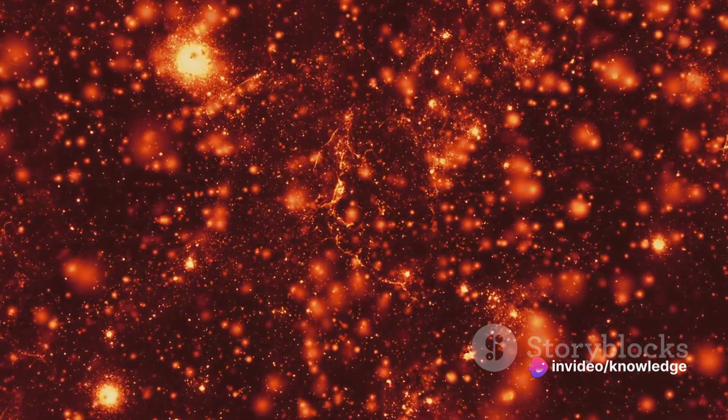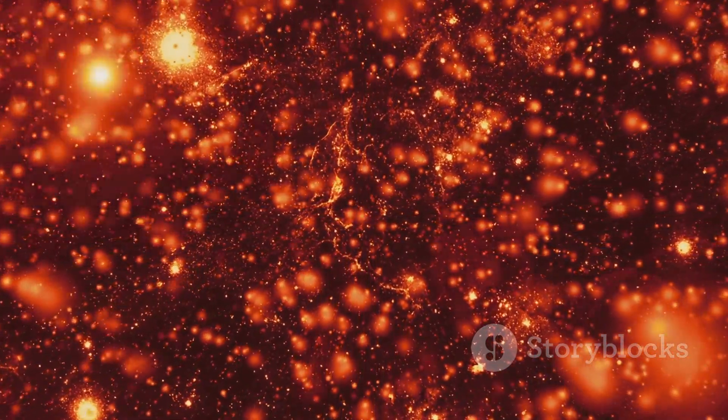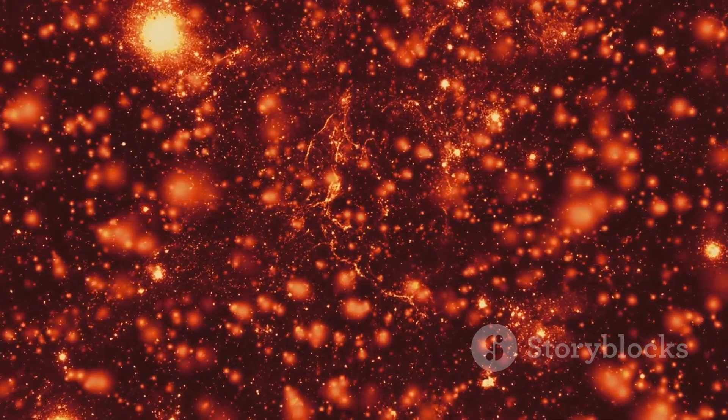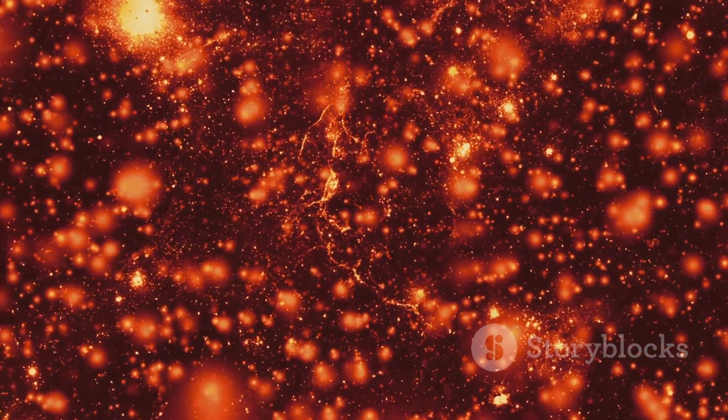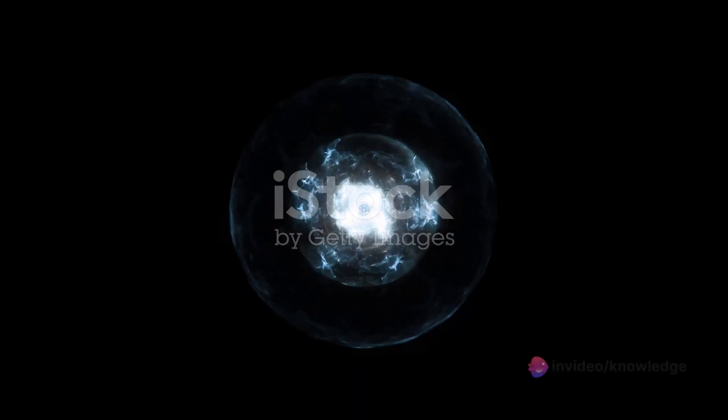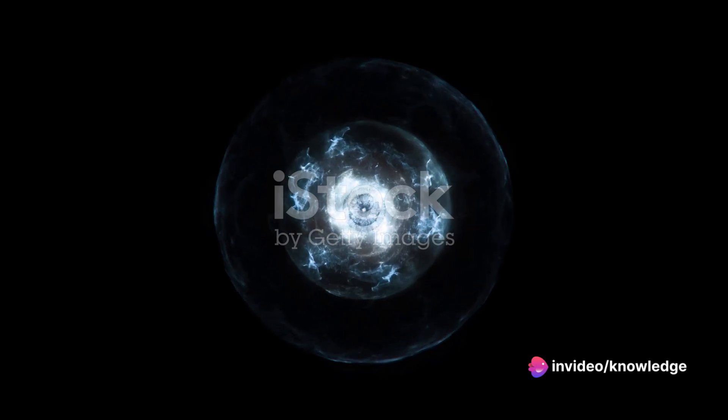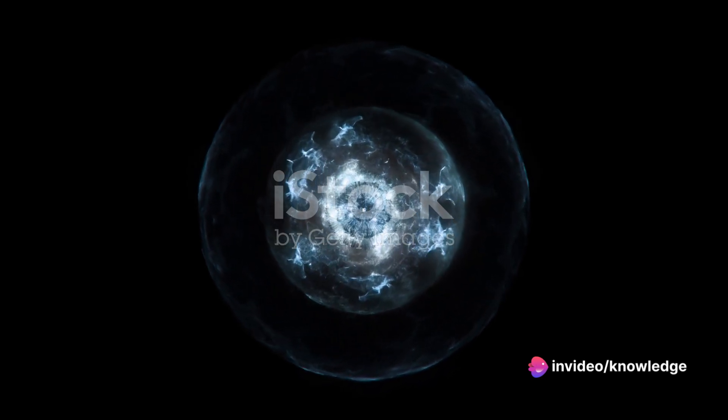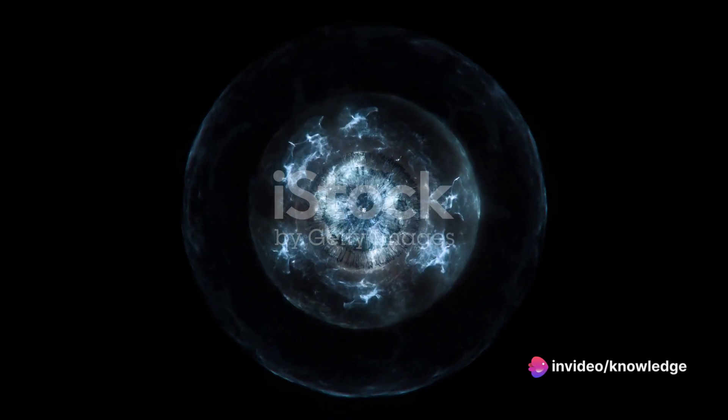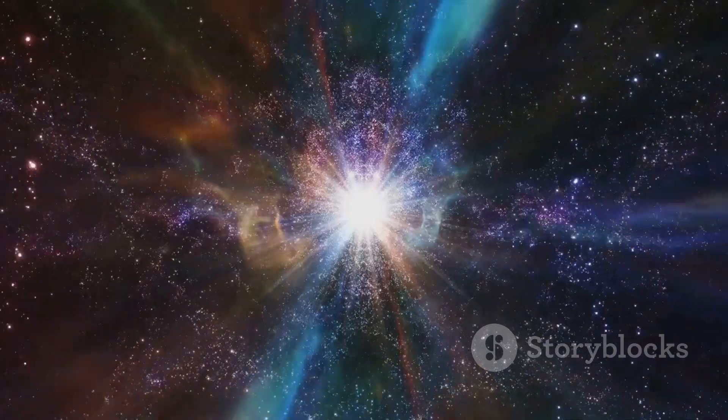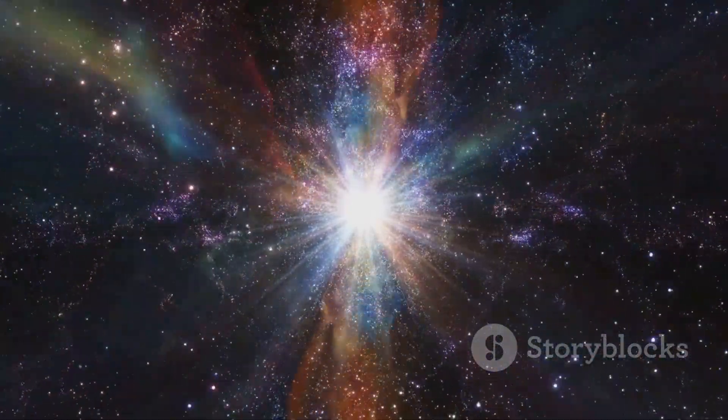However, if the core is even more massive, about three times the mass of the sun or more, even the neutrons can't withstand the gravitational pull. Instead, they collapse inward, resulting in a bottomless pit of gravity, a black hole. These mysterious entities are so powerful that not even light can escape their grasp.